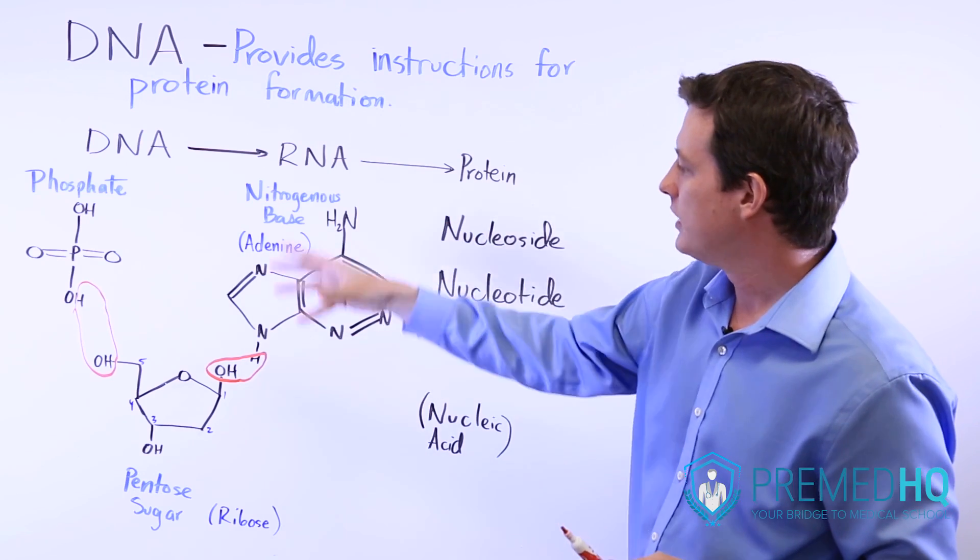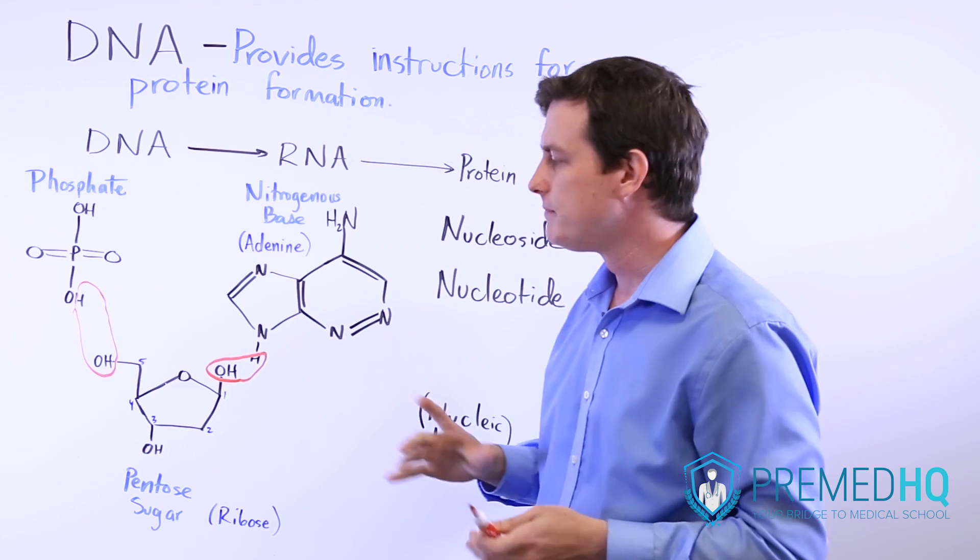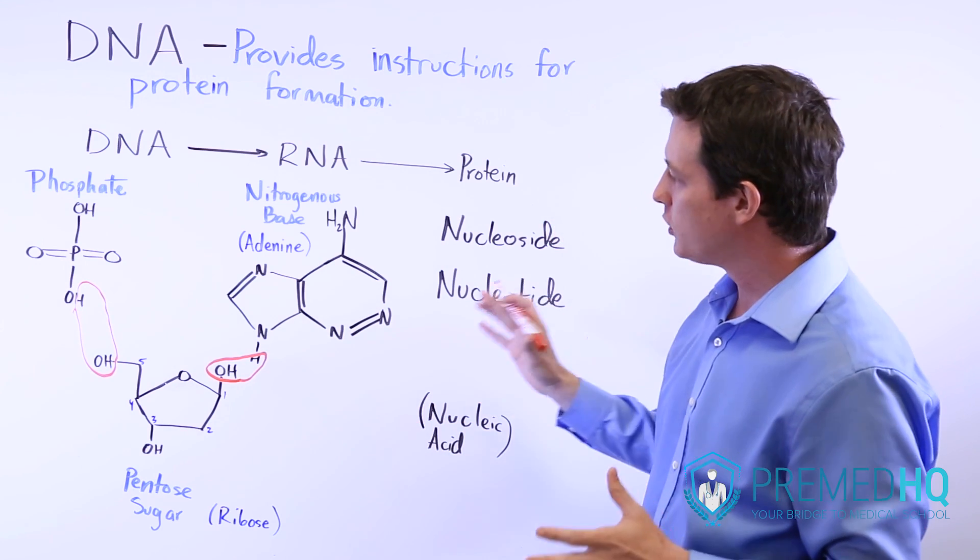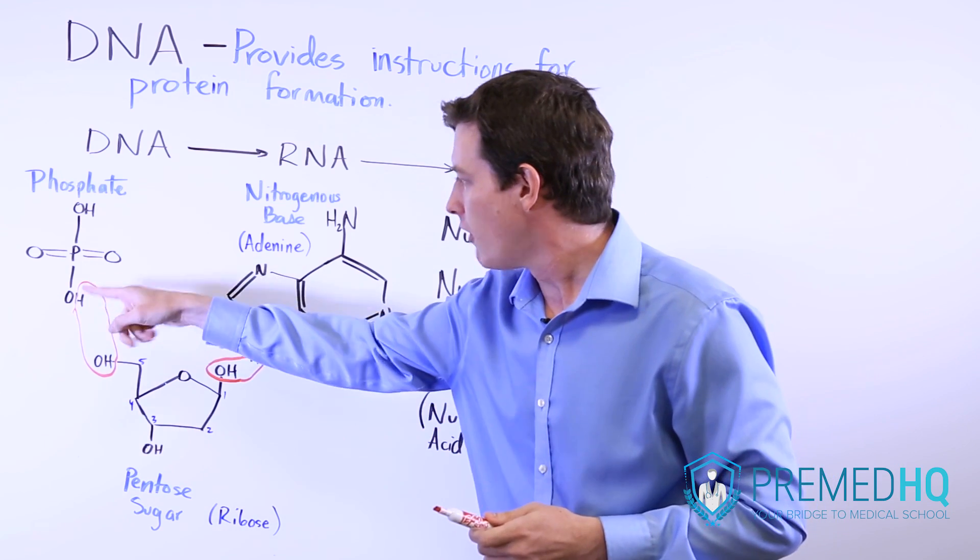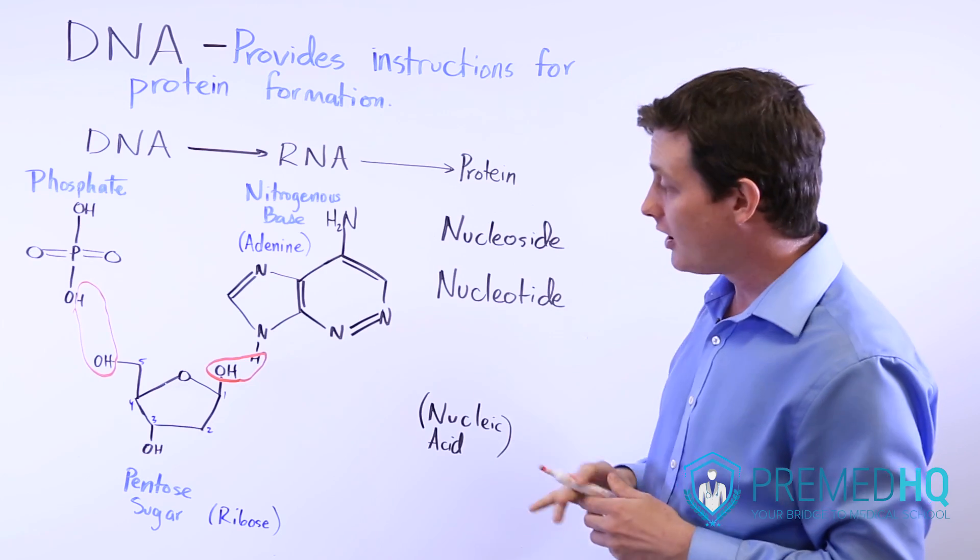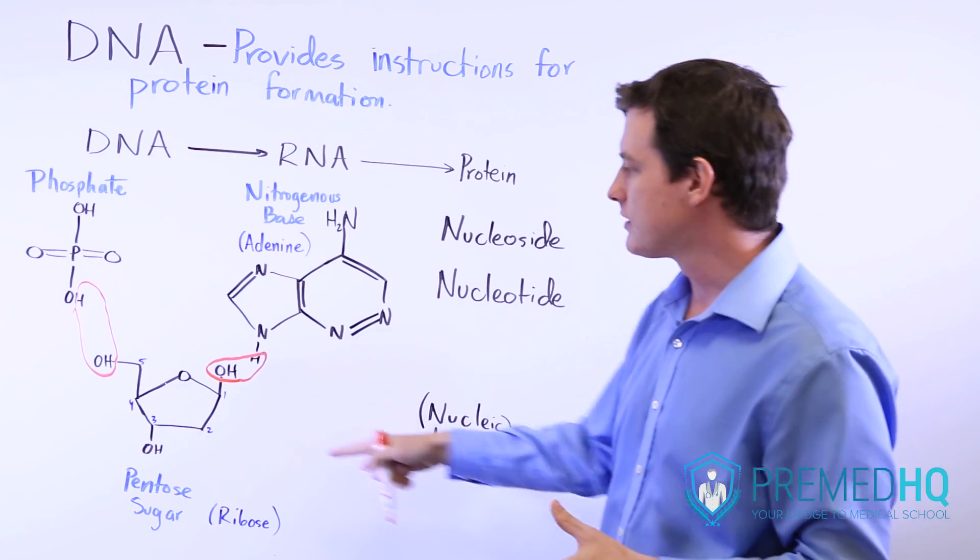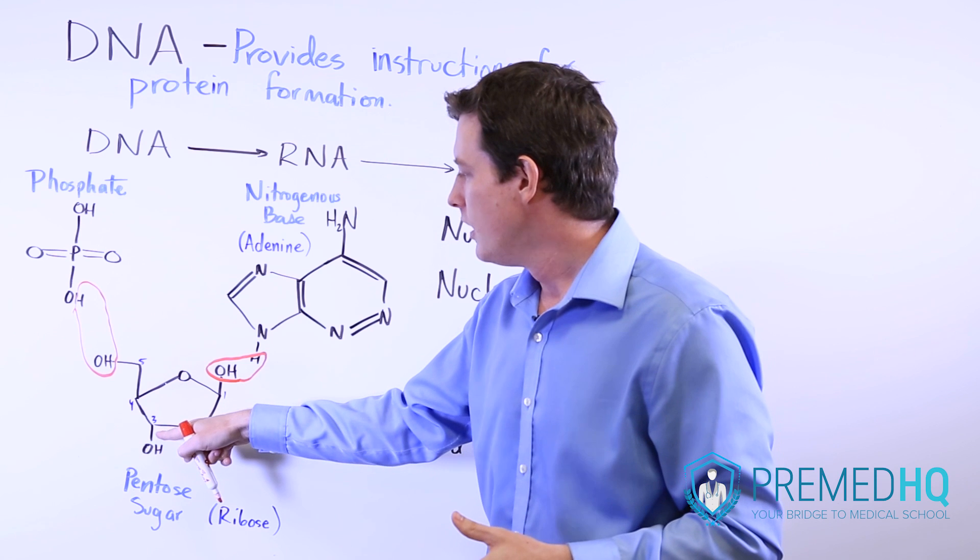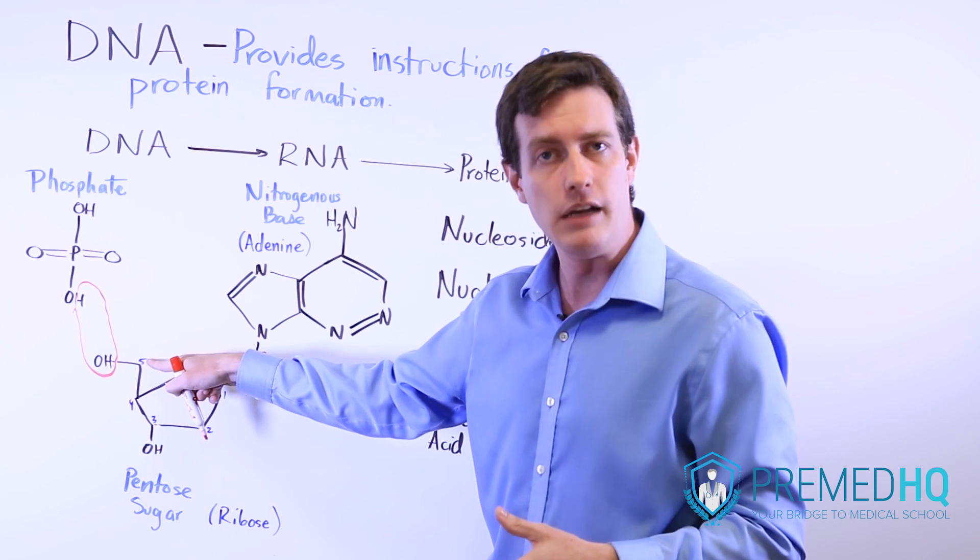For example, this will be the adenosine monophosphate nucleotide. Ultimately, a nucleotide has three components: the nitrogenous base, the pentose sugar, and the phosphate group. All three of these are bound.